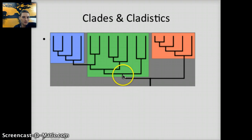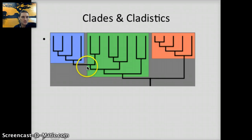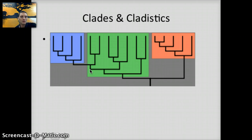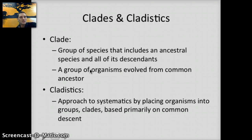Right here would represent the ancestor to all of these different species, and these endpoints would represent different species. Green is not a clade because the blue portions here would need to be colored green, as they represent ancestors of this species. Clades include all species alive today as well as common ancestral species that may no longer be present. Cladistics is an approach to systematics by placing organisms into groups or clades based primarily on common descent.